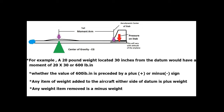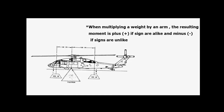Whether the value of 600 lb·in is preceded by a plus or minus sign depends on the following rules: any item of weight added to the aircraft on either side of the datum is plus weight; any weight item removed is a minus weight. When multiplying a weight by an arm, the resulting moment is plus if the signs are alike, and minus if the signs are unlike.